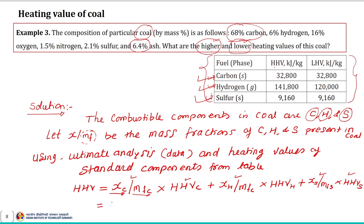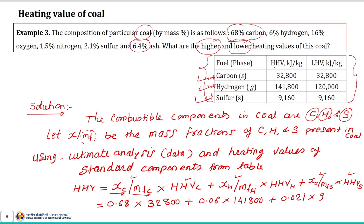The HHV is: (mass fraction of C × HHV of C) + (mass fraction of H × HHV of H) + (mass fraction of S × HHV of S). Substituting values: 0.68 × 32,800 + mass fraction of H × 141,000 + mass fraction of S × its HHV (all in kJ/kg). After multiplication, the final answer comes out to approximately 31,004 kJ/kg.